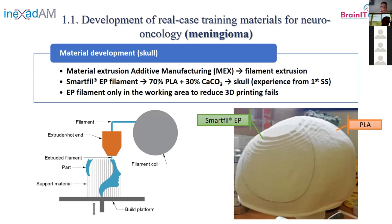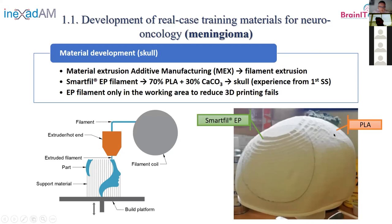This filament has some problems when printing because the calcium carbonate content tends to accumulate powder in the extrusion system. To avoid that, we divided the skull into two parts: we used the Smart Fill EP filament only in the region of interest — the working area — and standard PLA for the rest. This way we avoid printing problems, which is important given that printing these skulls can take around 20 hours.